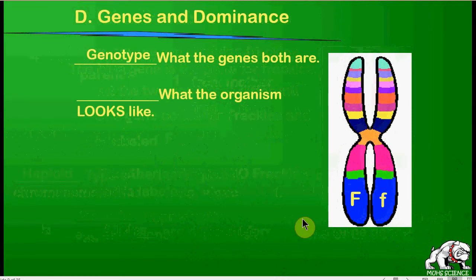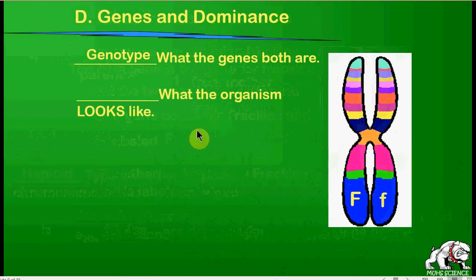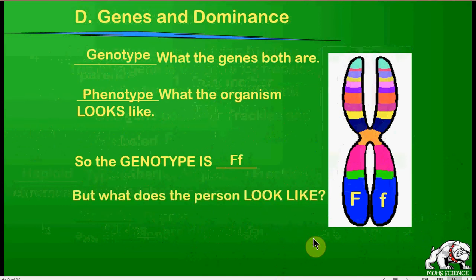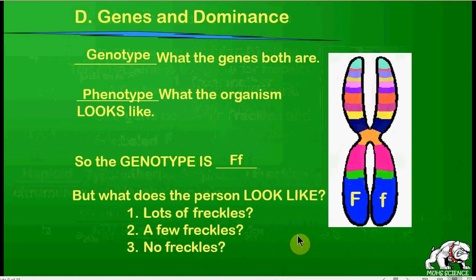In an organism, what the genes are is called the genotype. The genes you read off the chromosomes are the genotype, and what the organism actually looks like is called the phenotype. In this case, we have a genotype of capital F, lowercase f, and we want to know what this person actually looks like — do they have freckles or not?